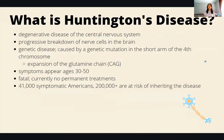Huntington's disease affects the nervous system and it causes the brain cells to break down. Huntington's is a genetic disease and it's caused by too many glutamines in the fourth chromosome.